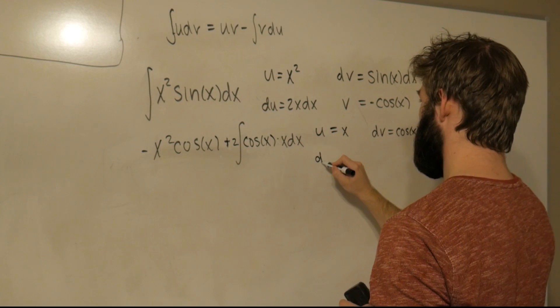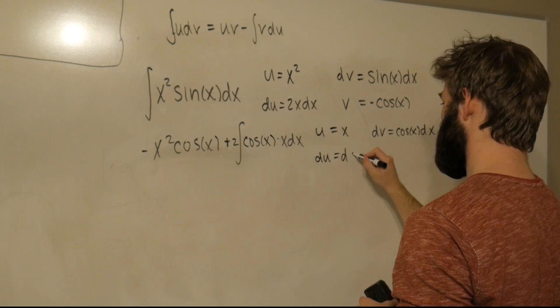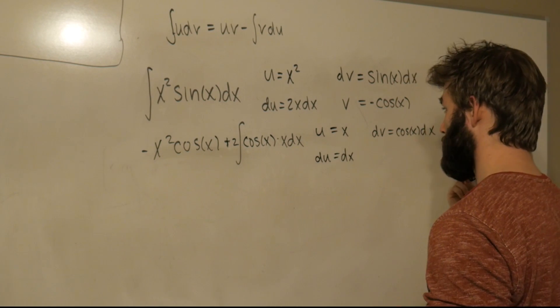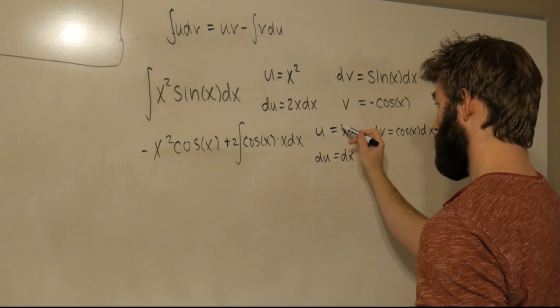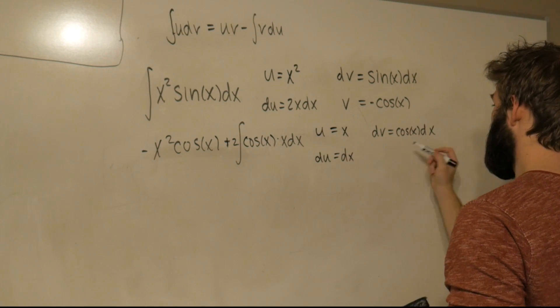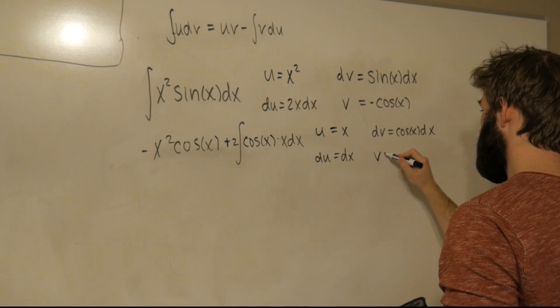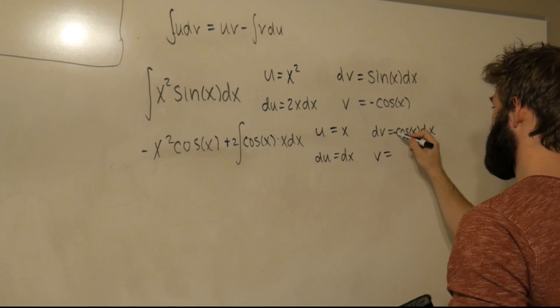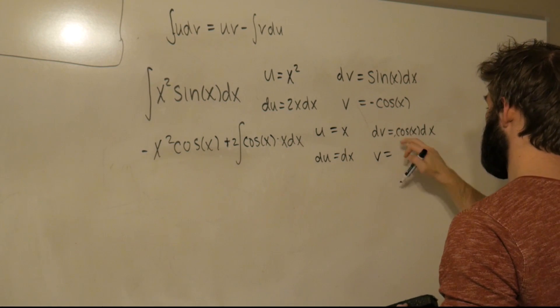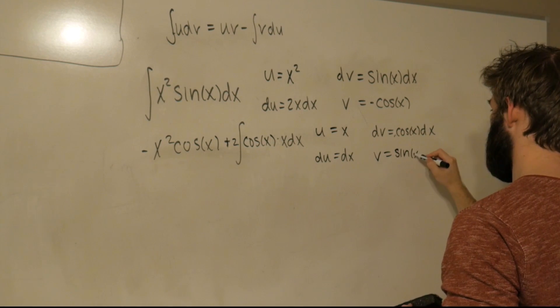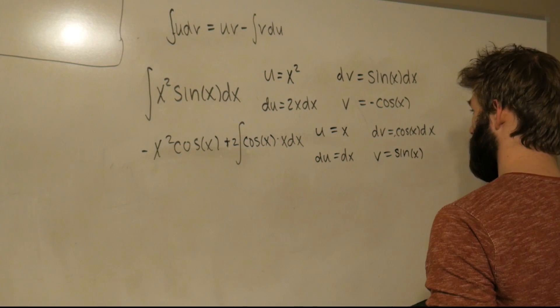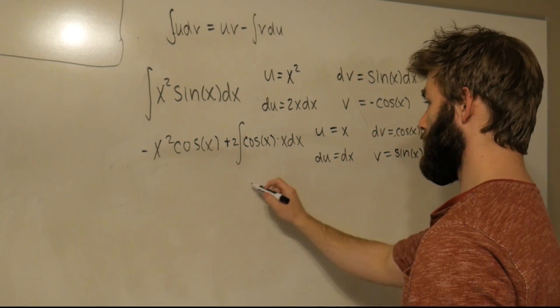Then du is just dx, because the derivative of x is just 1. And that would normally be du/dx. The dx gets multiplied over. And then the integral of dv is v. This is just going to give us sin(x). Great.